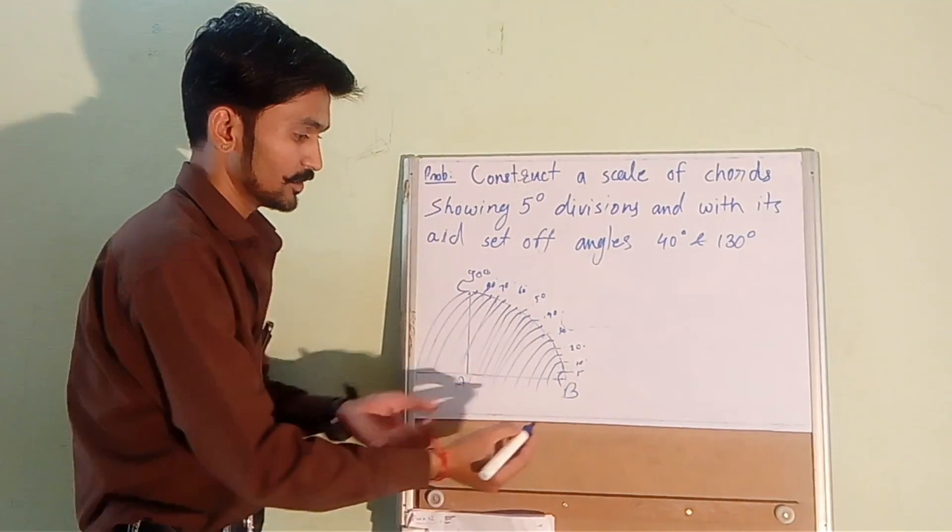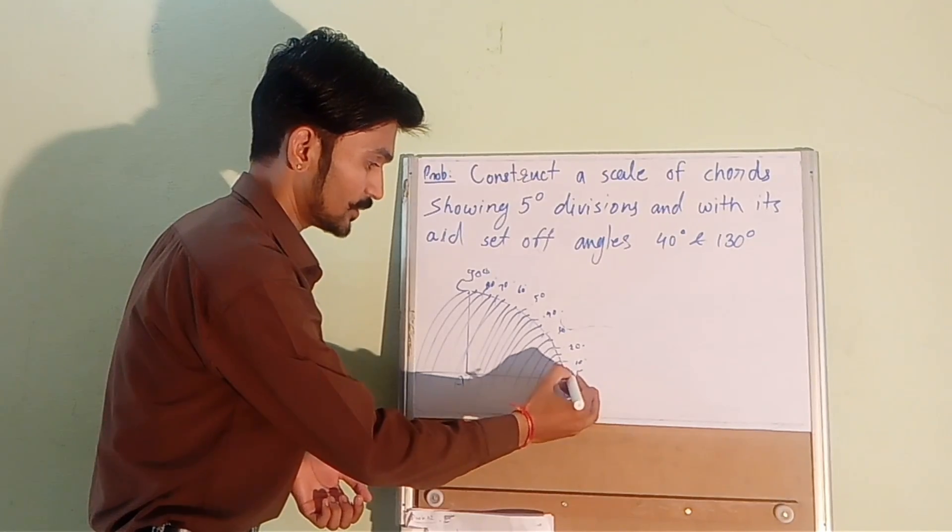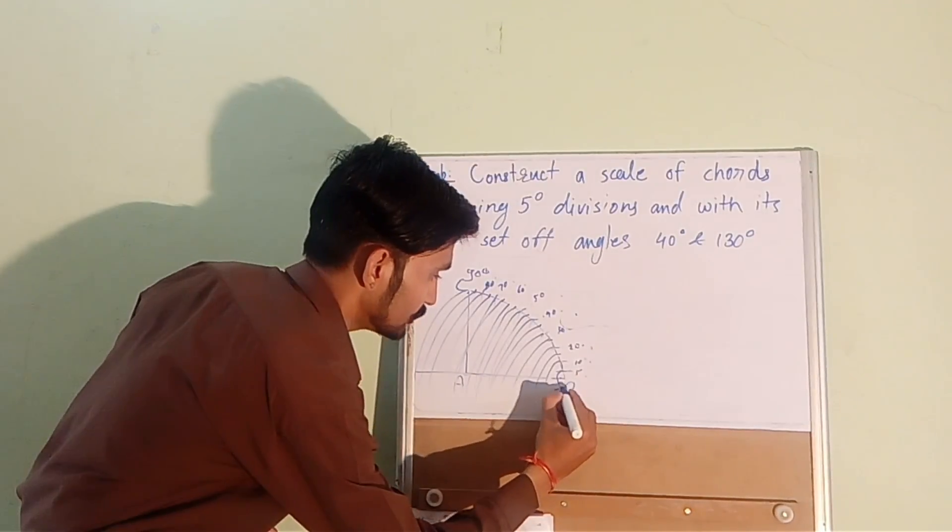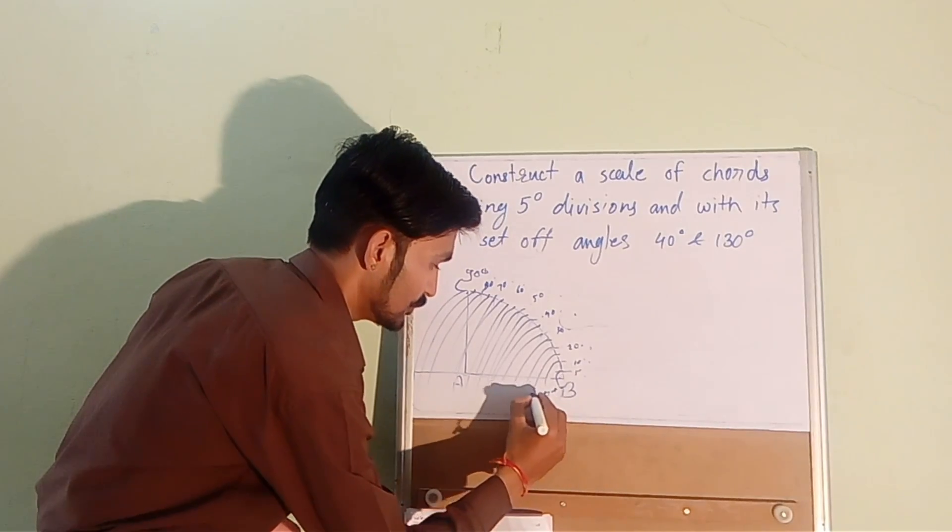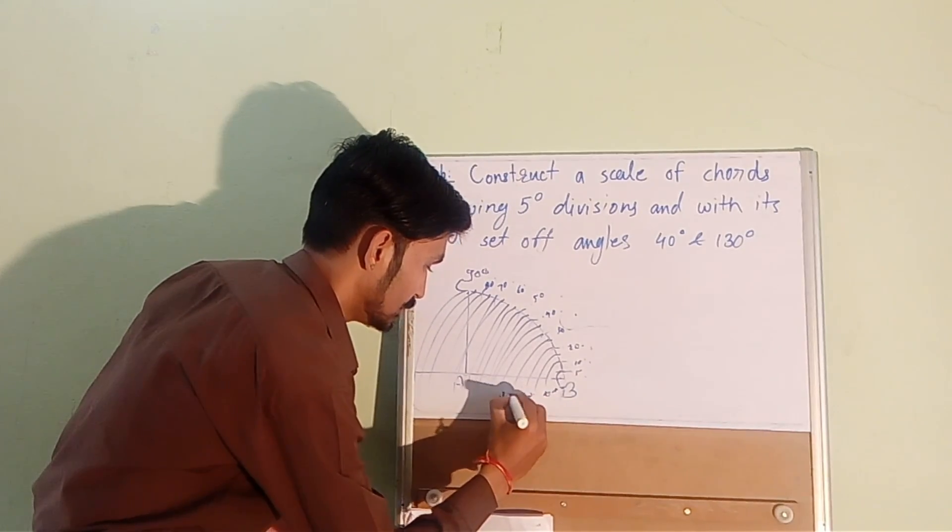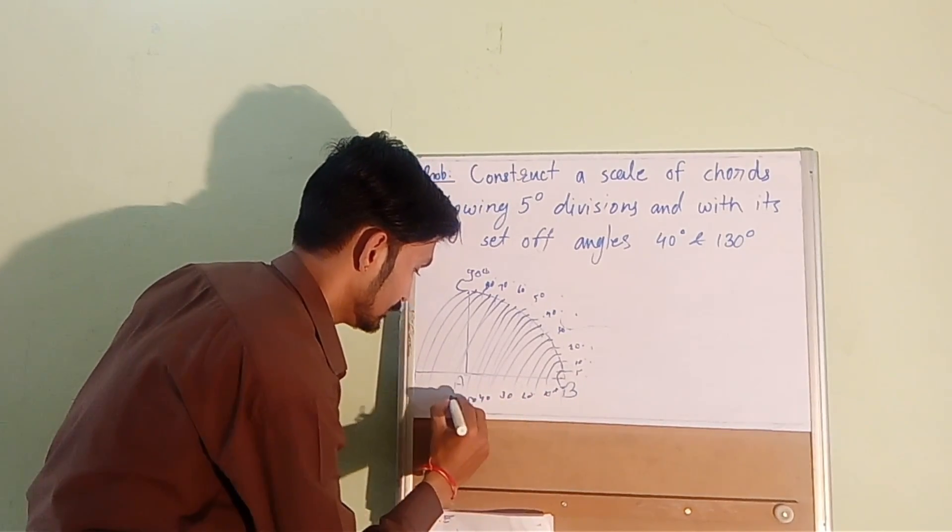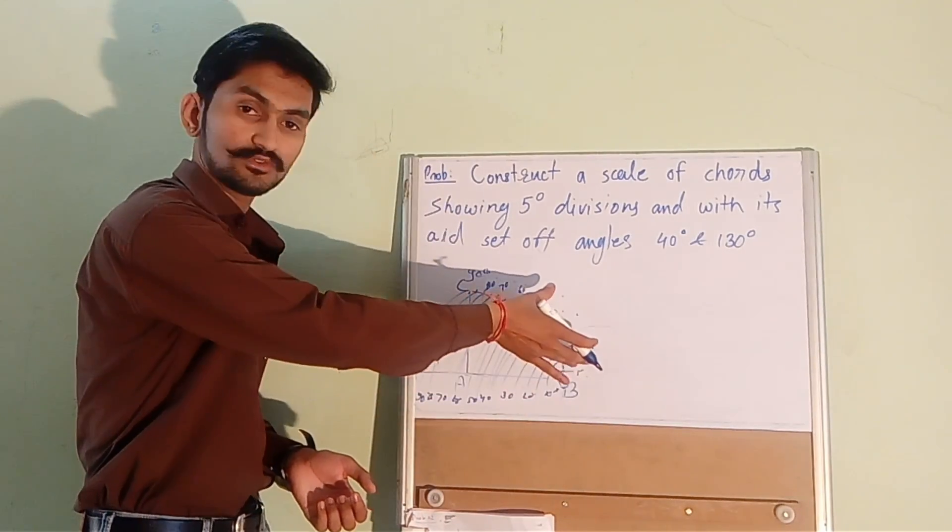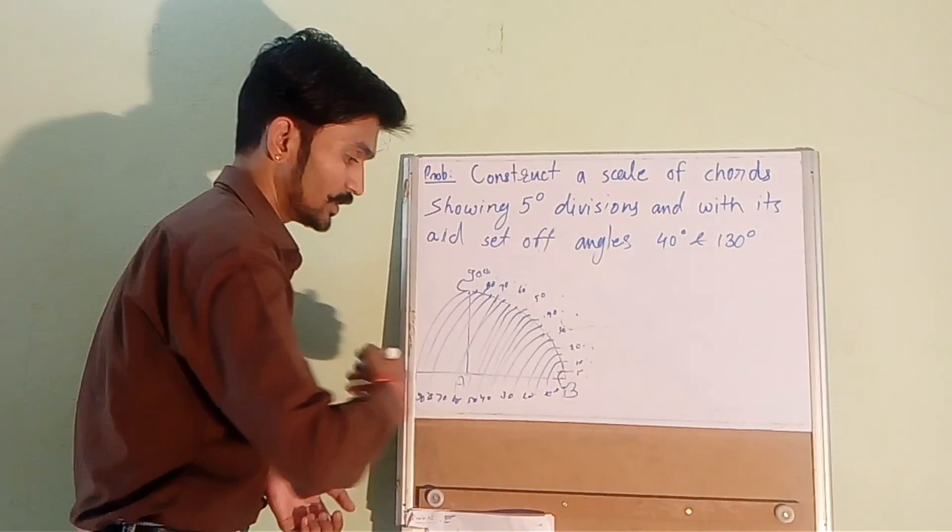So what we are doing is we are transferring these angles on this line. So this is 5 degree, 10 degree, 15, 20 degree, 30 degree, 40 degree, 50 degree, 60, 70, 80 and 90 degree. So we have transferred these angles on the line.